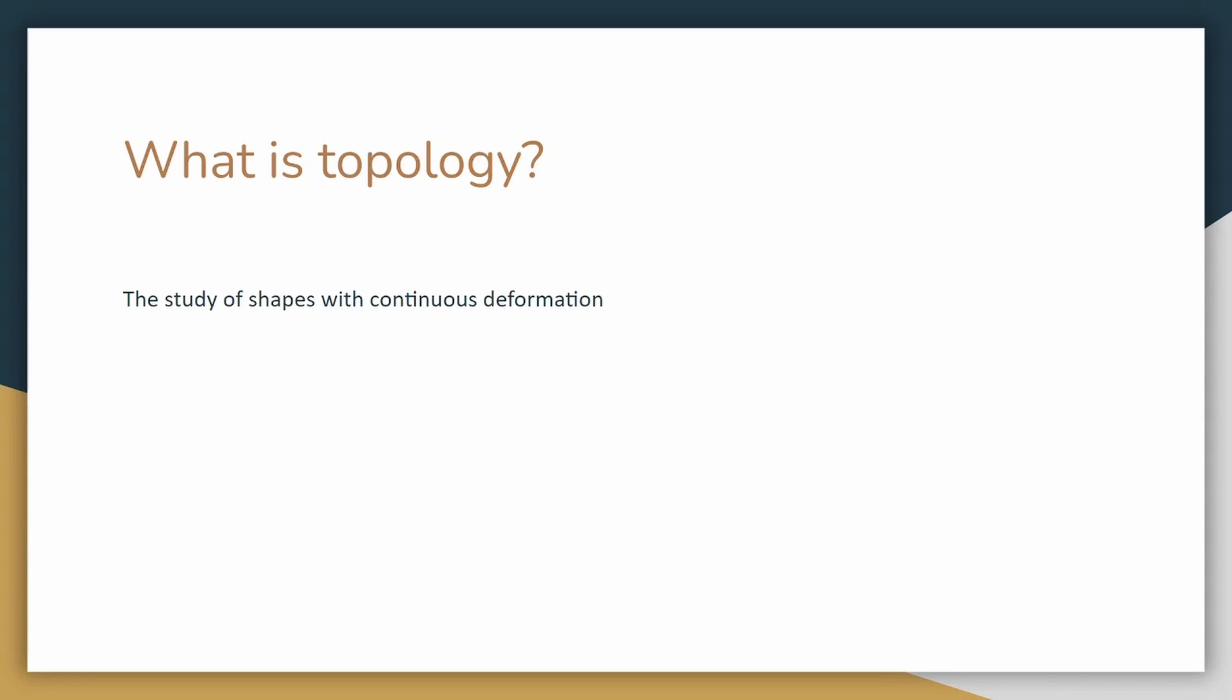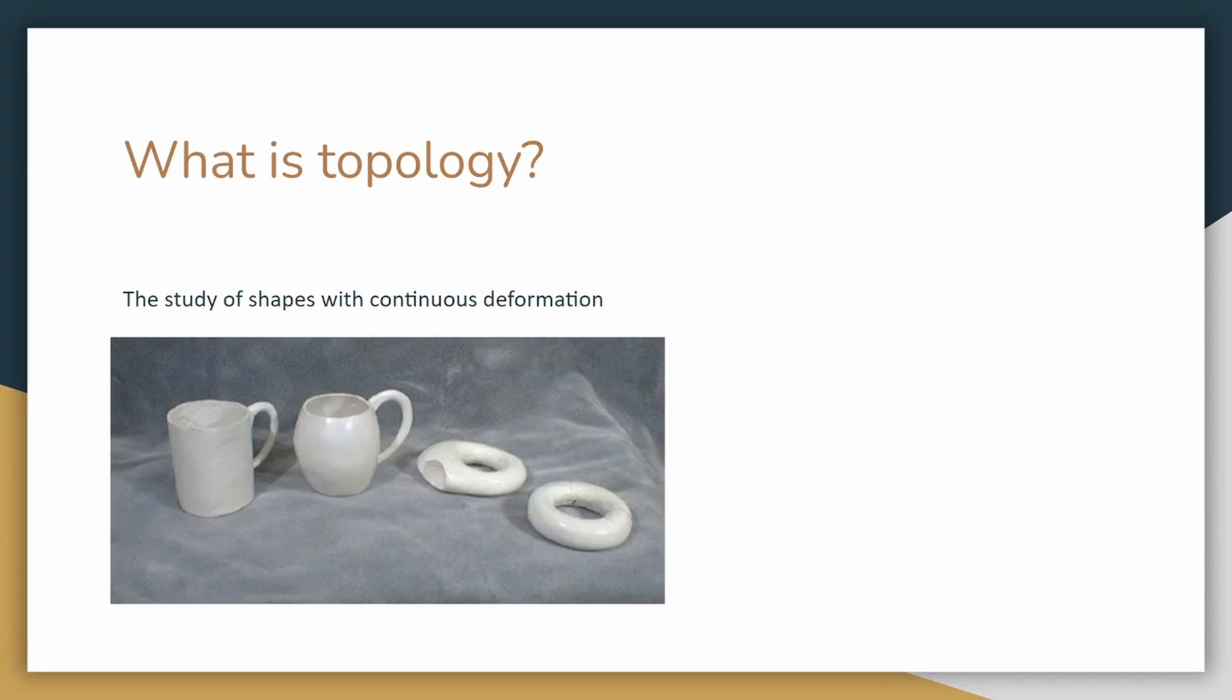Topology is a field in mathematics that concerns the properties of shapes such that only the large-scale properties matter. These properties include the number of surfaces, number of holes, and the number of sides. One popular example is showing that a mug is the same as a donut. The mug can be continuously deformed to obtain the donut.